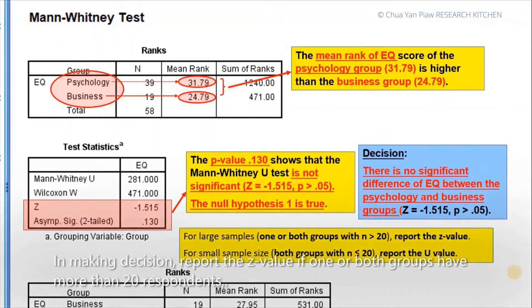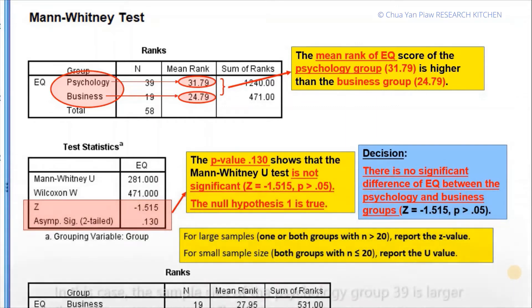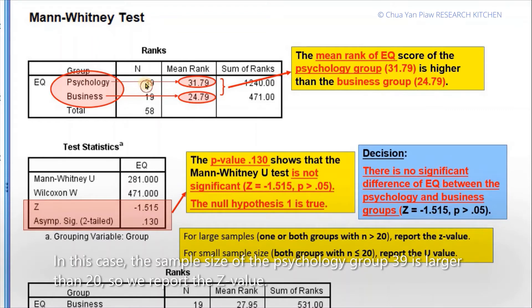In making a decision, report the z-value if one or both groups have more than 20 respondents. However, report the U-value if the sample size of both groups are equal to or smaller than 20. In this case, the sample size of the psychology group, 39, is larger than 20, so we report the z-value.